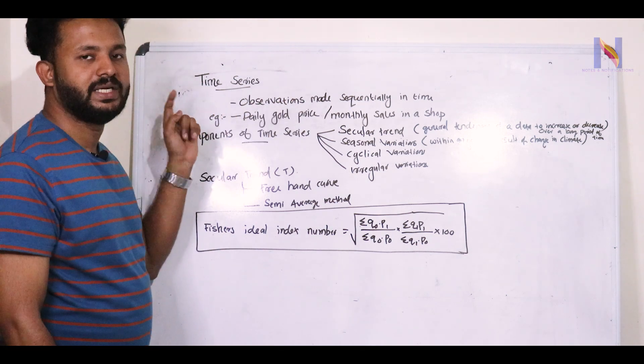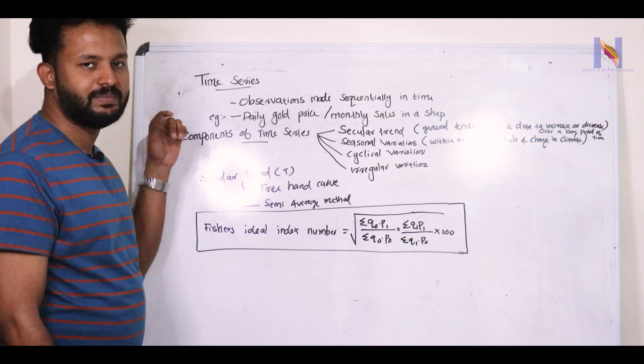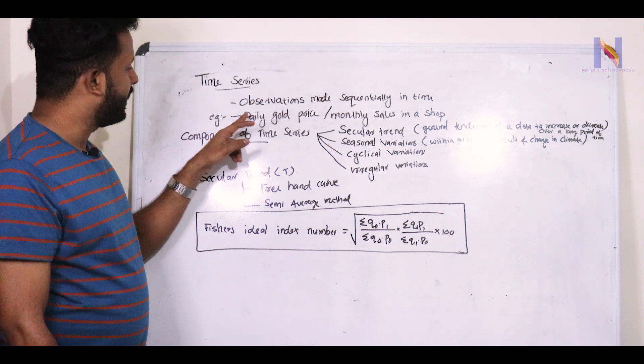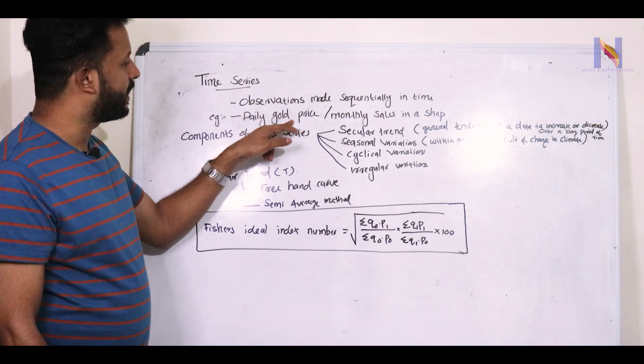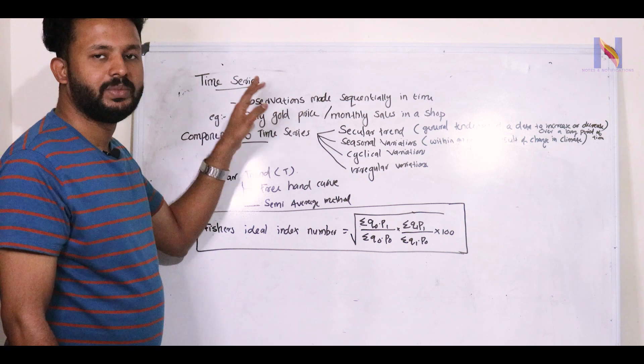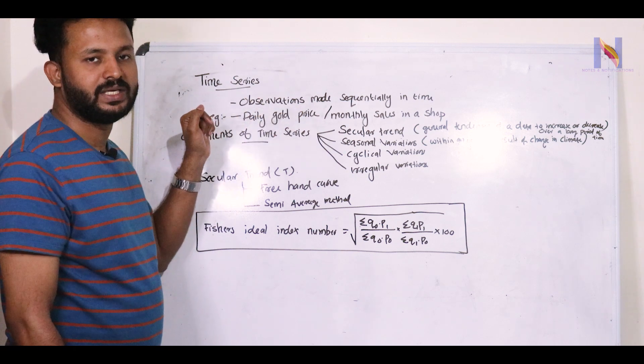Observations made sequentially in time form a time series. An example is the daily gold price. We are going to study the sales price — this is a time series.